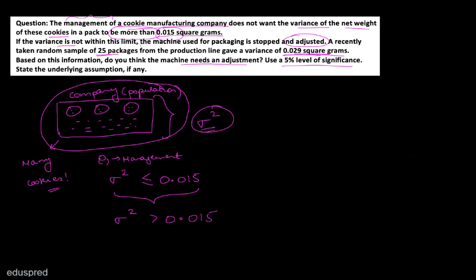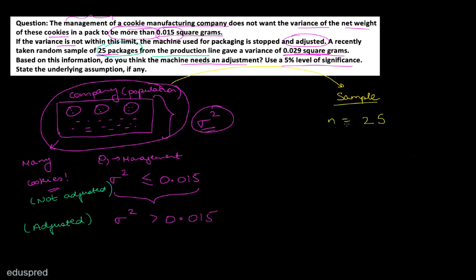If the variance is not within this limit, the machine used for packaging is stopped and adjusted. This implies that if sigma squared is greater than 0.015, the machine will be adjusted; and if sigma squared is less than or equal to 0.015, the machine is not adjusted. We have taken a random sample of 25 packages from the production line, so n equals 25. These 25 packages gave a sample variance s squared equal to 0.029 square grams.